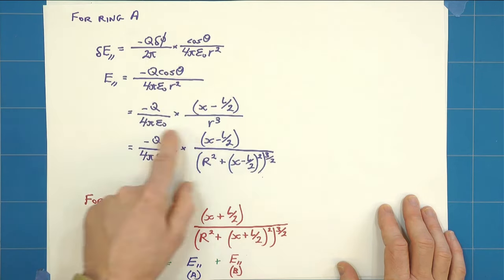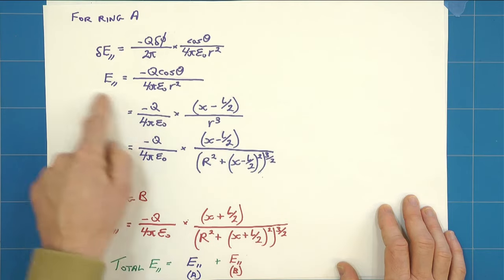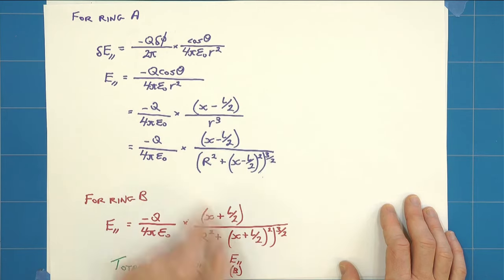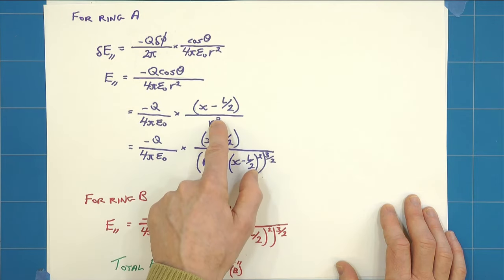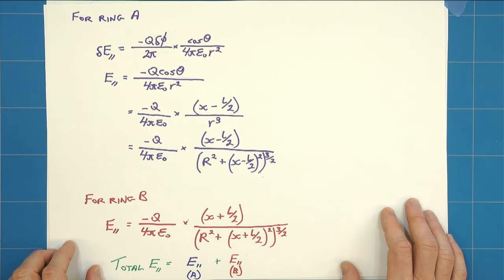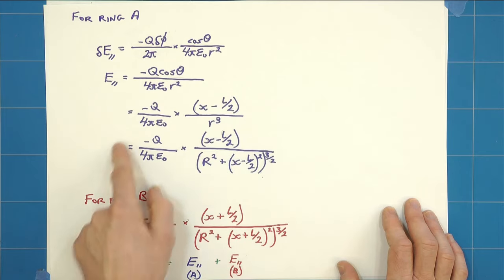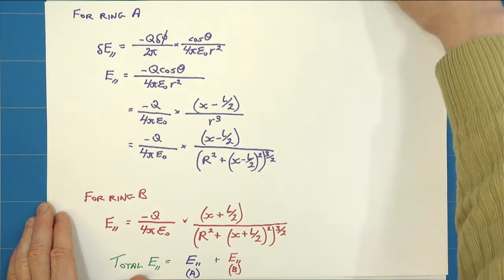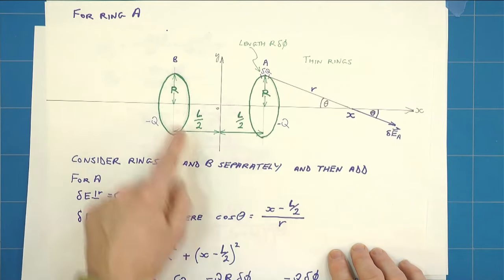When we substitute for cos theta we get that, which introduces another r down here. And then when we eliminate r cubed we get this term here. That is for one ring. I've called that ring A, so that's for this ring here.